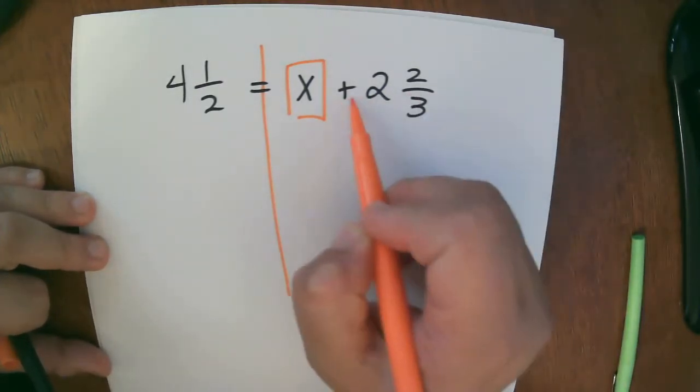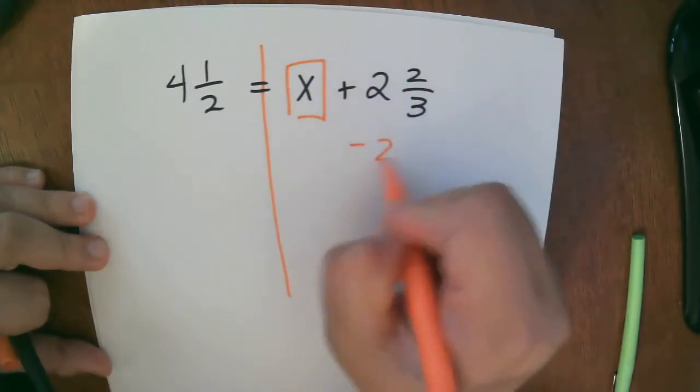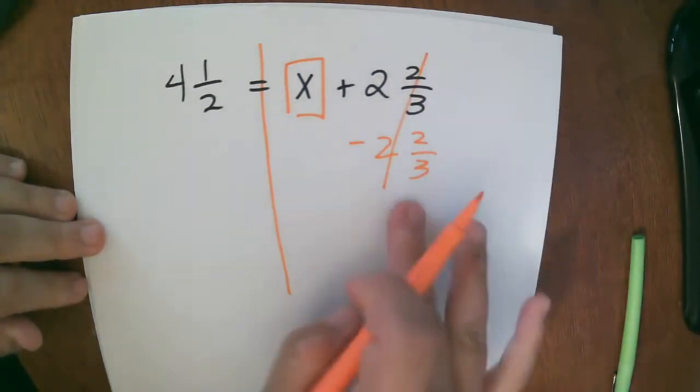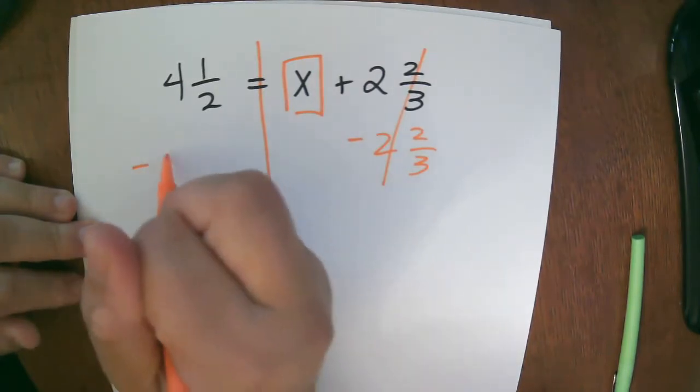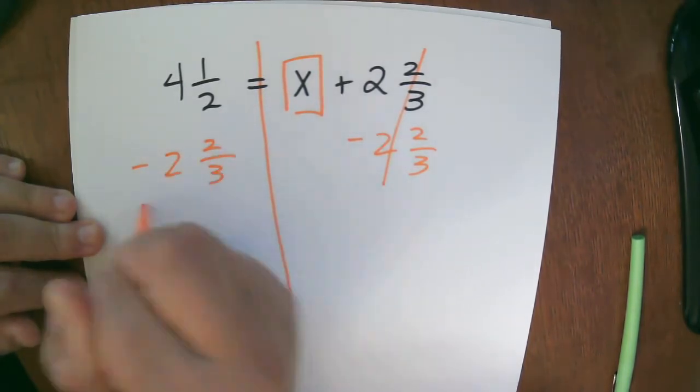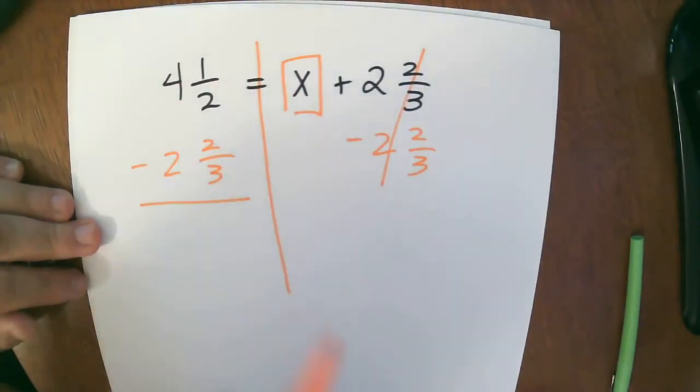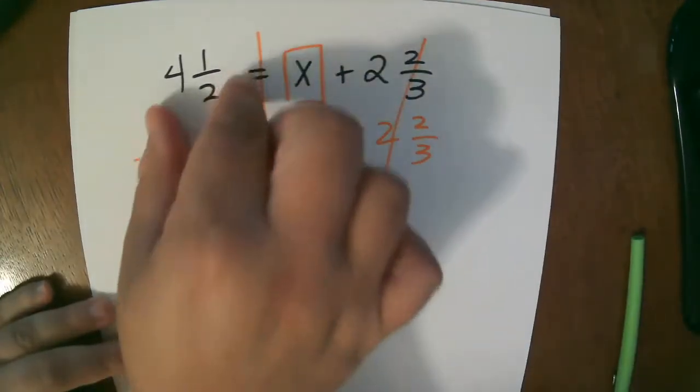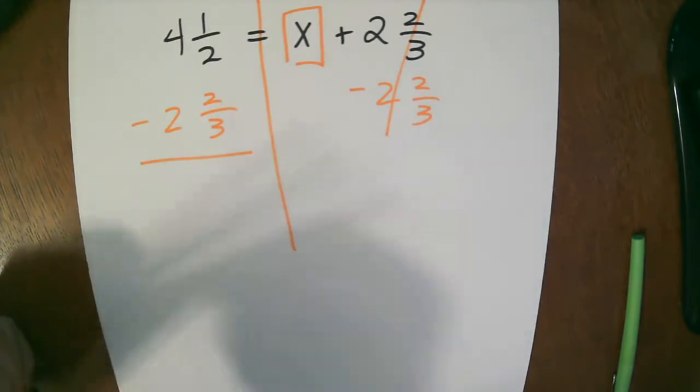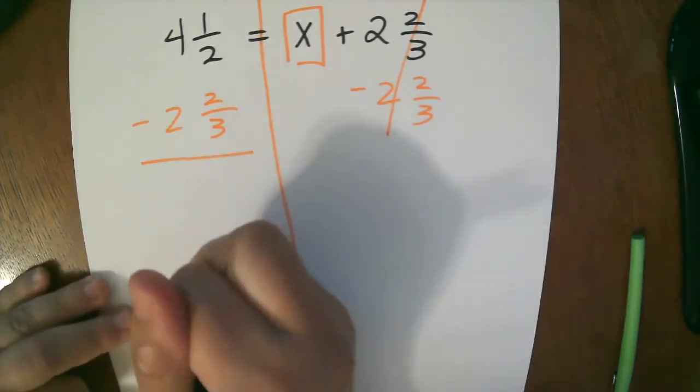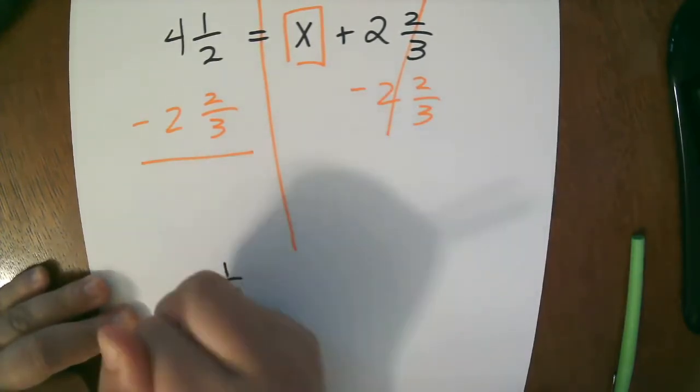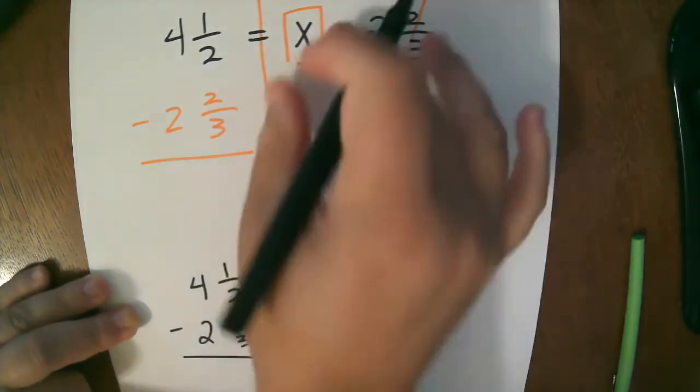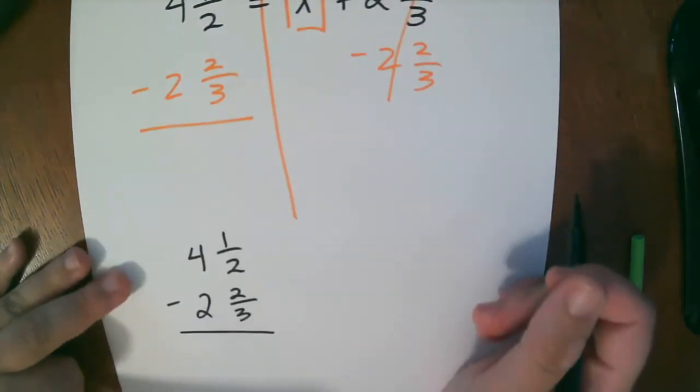These end up canceling out, becoming zero. Do the same thing on this side. Negative 2 and 2 thirds. So now we have a subtraction problem. So what I'm going to do is I'm just going to write it down here so I have more room to solve it. So I'm just rewriting it because I didn't have a ton of room to solve it over here.